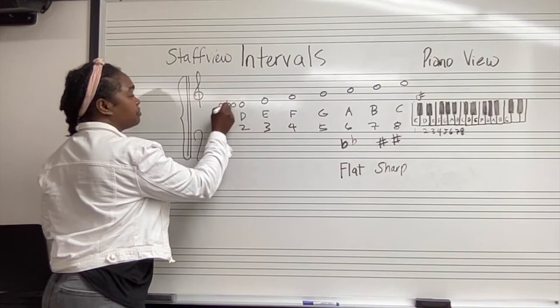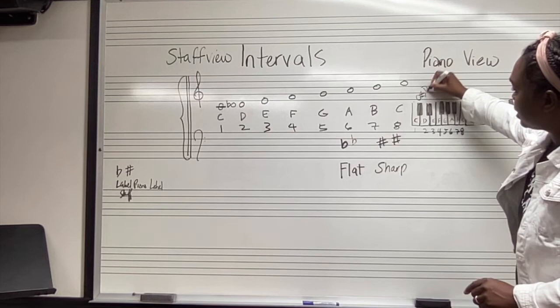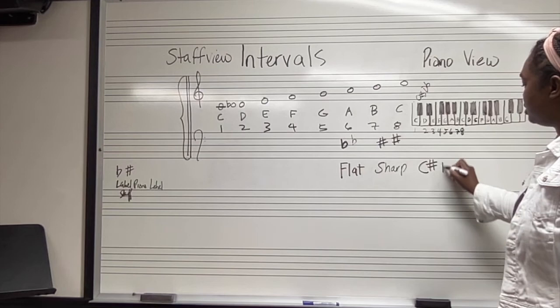So, if we go here, you see it on our piano view. This is a D, and we go down one, it now also becomes a D flat. So that's C sharp and D flat.